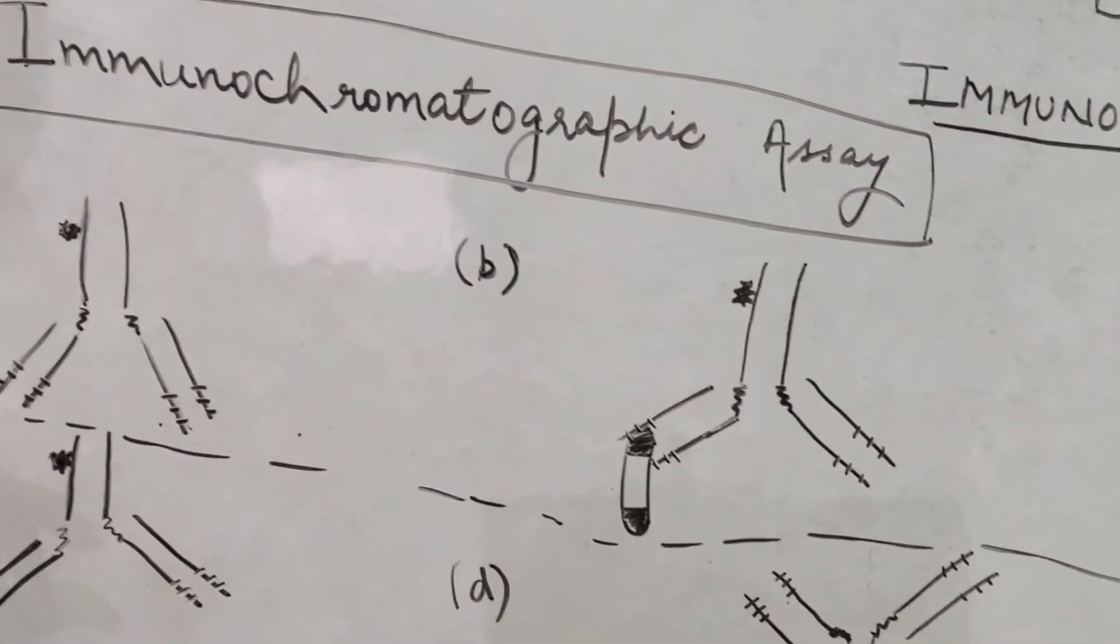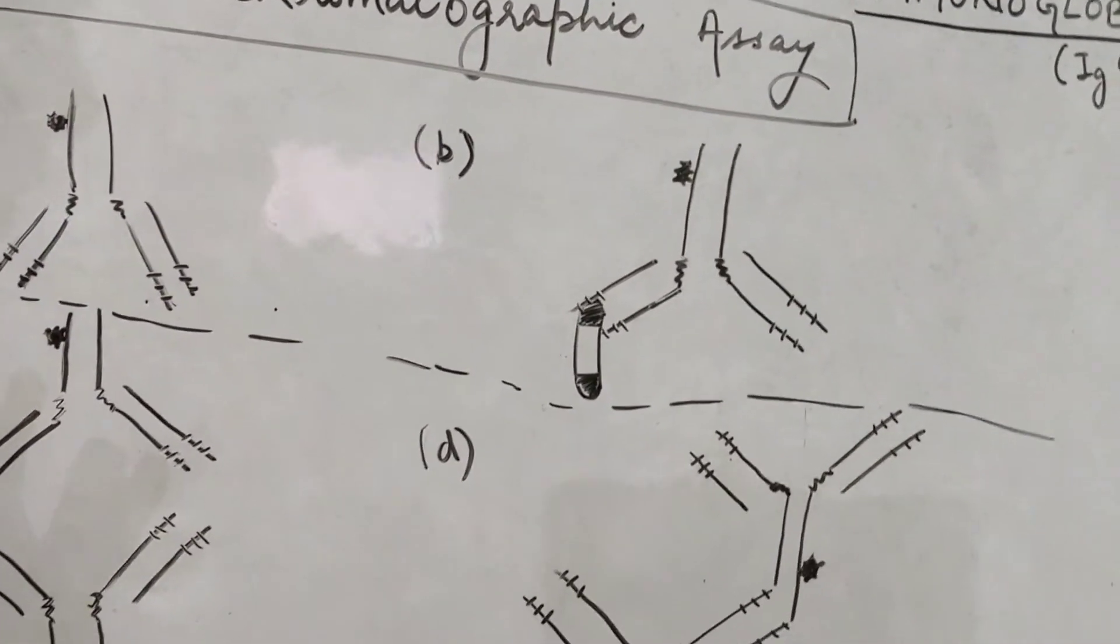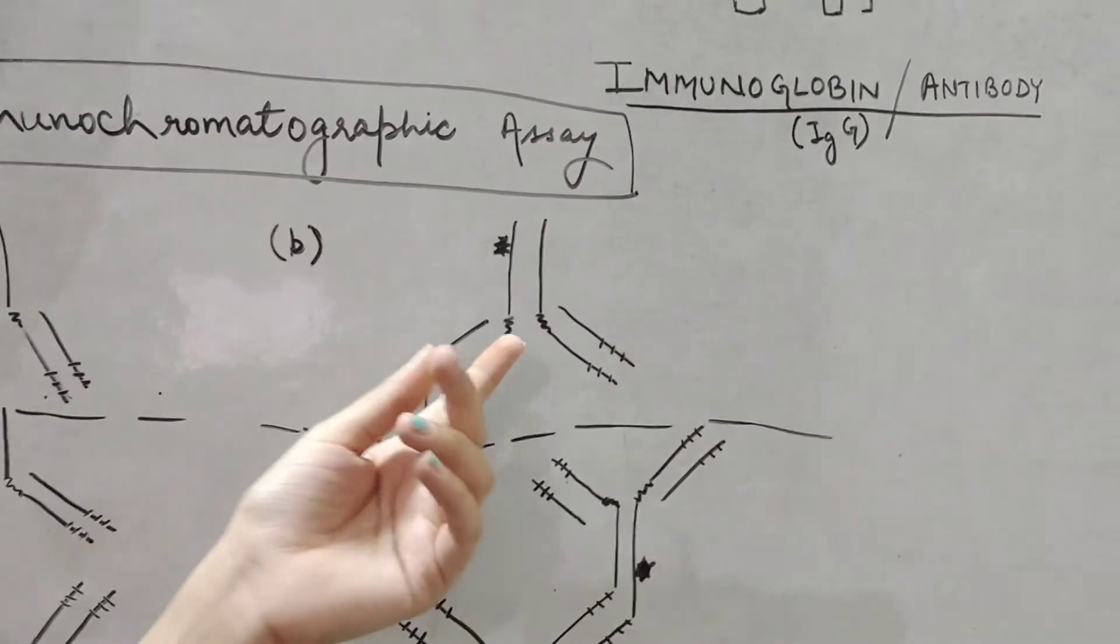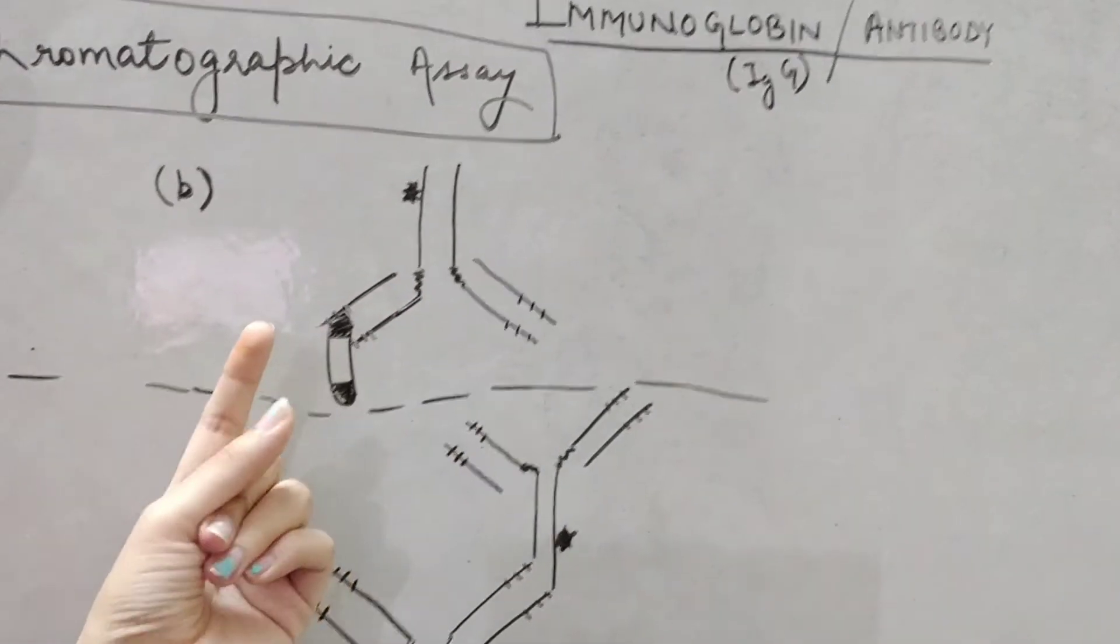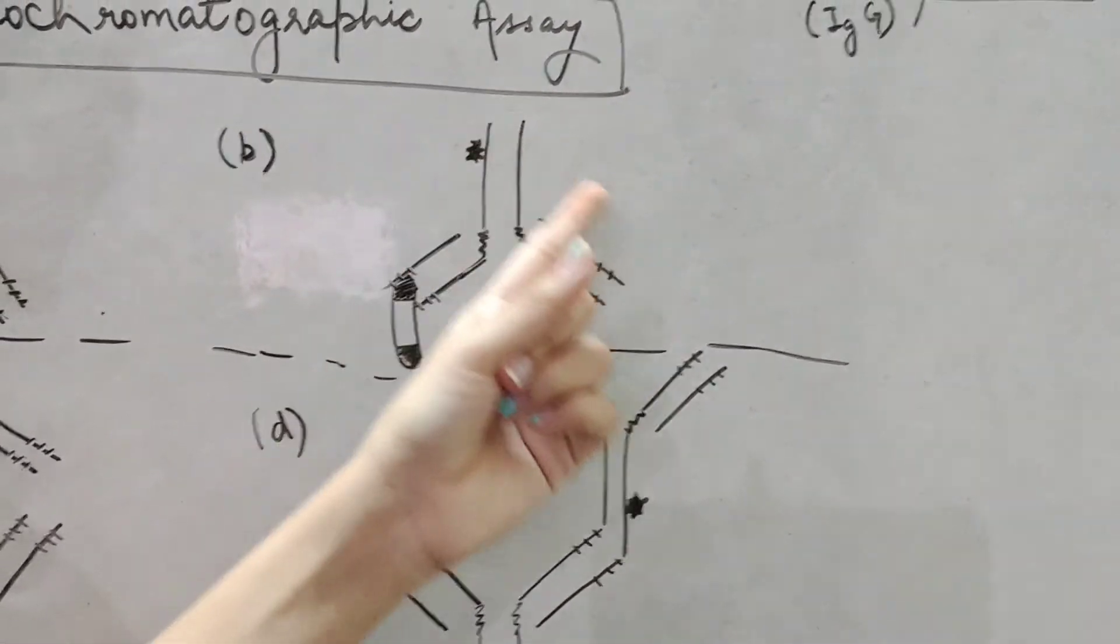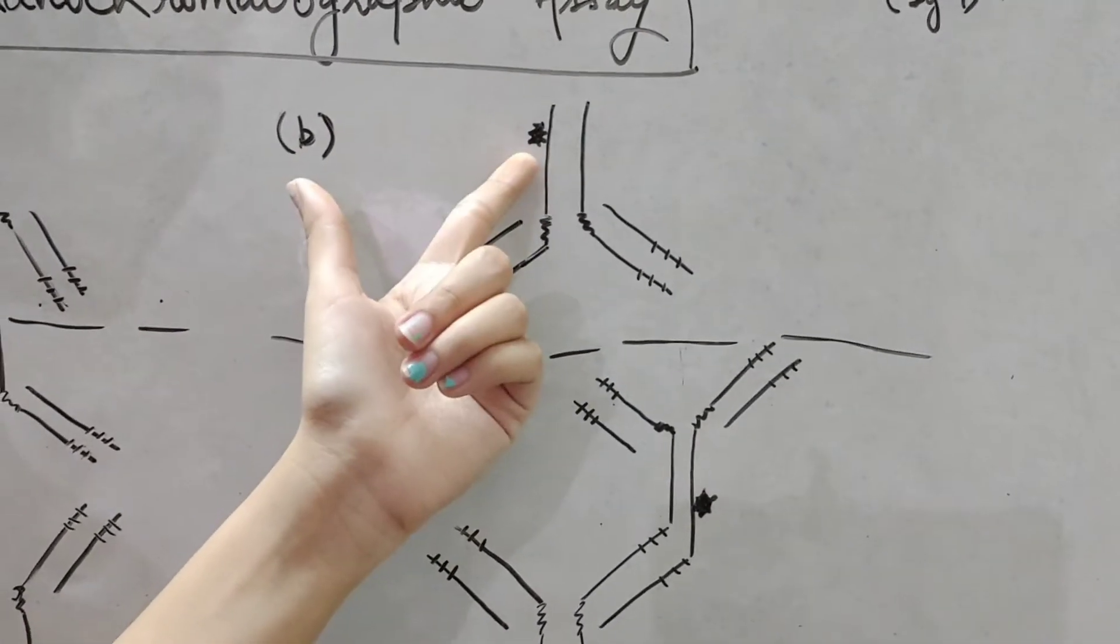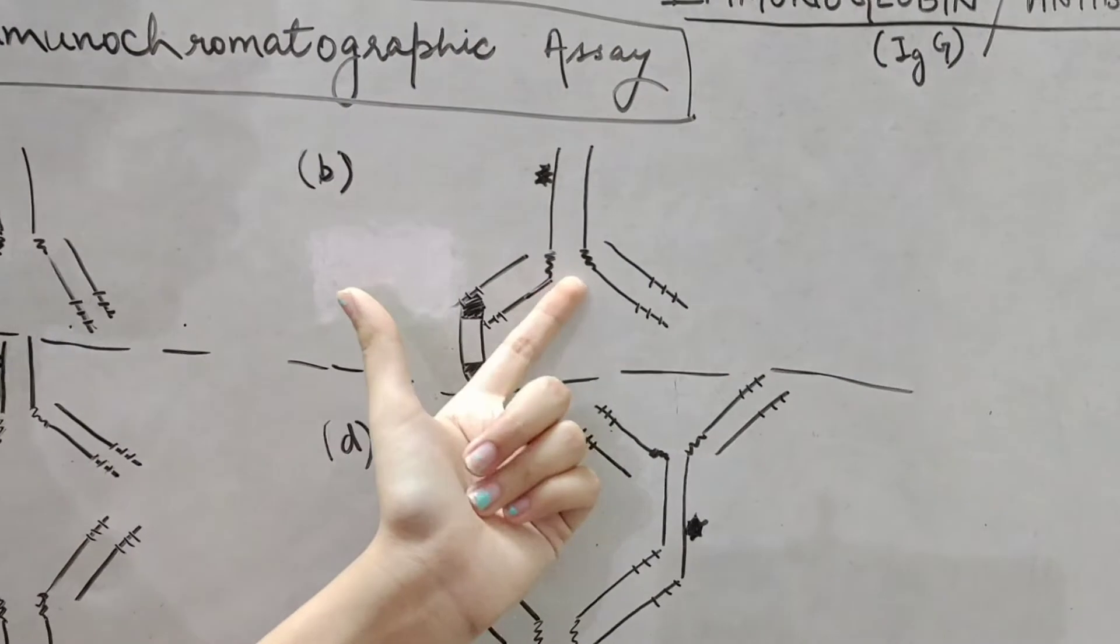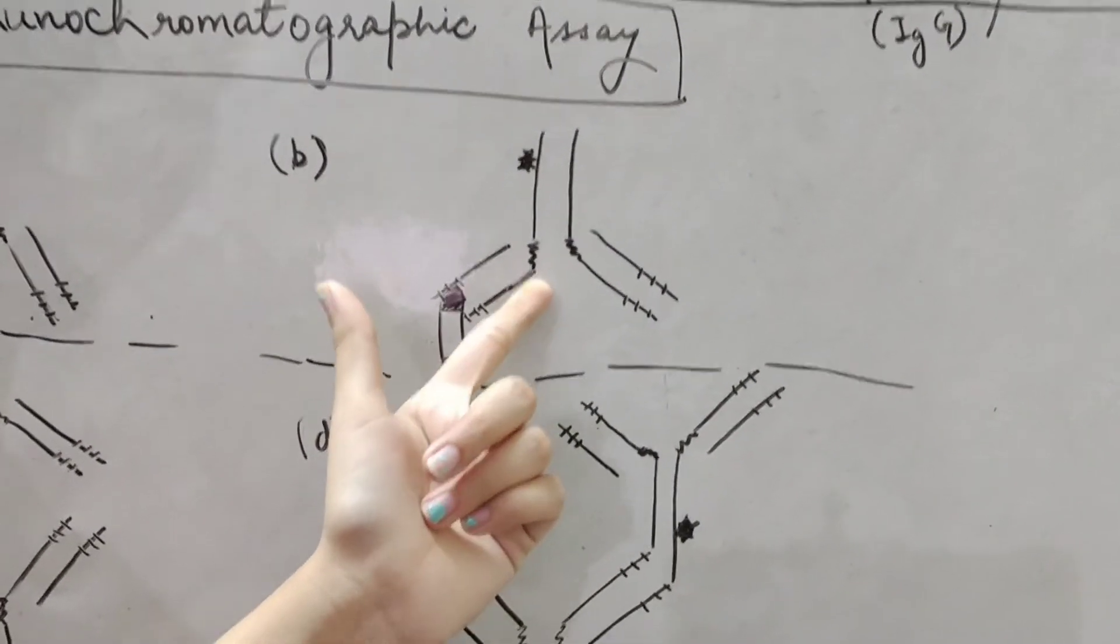So, now we mix the two of them in a sample. And this is the formation of a labelled anti-HB antibody, labelled anti-HB antiglobulin or antibody.